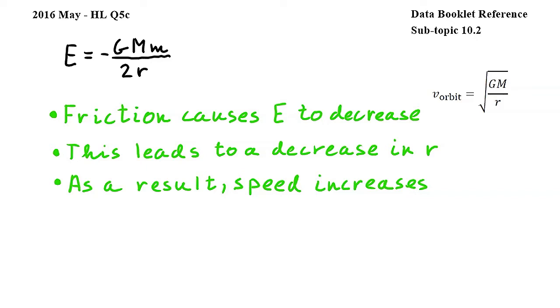This conclusion is somewhat counter-intuitive, because we would think that speed decreases due to friction. However, we have to remember that the total energy of the probe is the sum of its kinetic and gravitational potential energy. You do not have to include the equations in order to earn the three marks on this question.